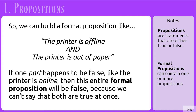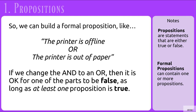If one part happens to be false, like the printer is online, then the entire formal proposition will also be false, because we can't say that both are true at once. If we change the AND to an OR and say 'the printer is offline OR the printer is out of paper,' then it is okay for one of the parts to be false, as long as at least one of the propositions is true.